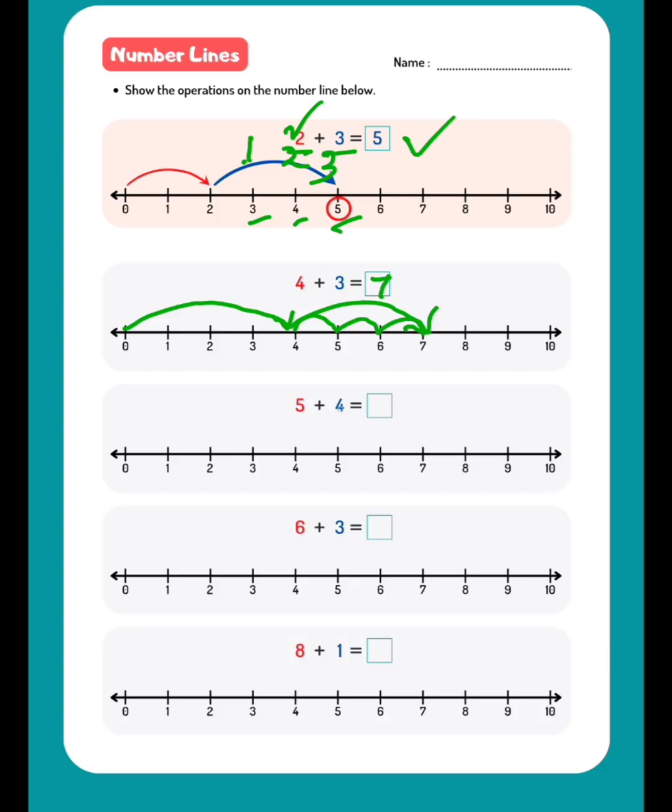Now 5 plus 4. 5, then 1, 2, 3, 4. Directly you can go to 9. So 5 plus 4 equals 9. I hope you understood.